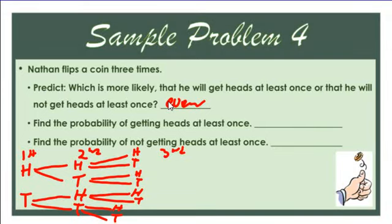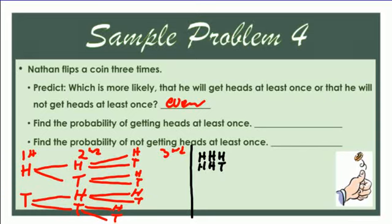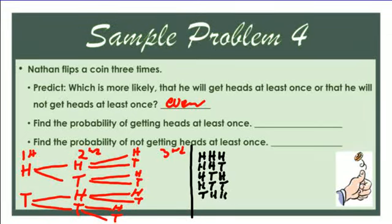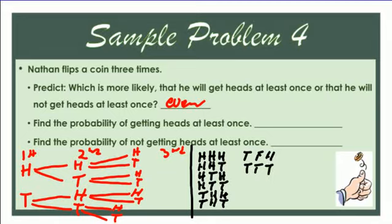Listing all outcomes: HHH, HHT, HTH, HTT, THH, THT, TTH, TTT. Those are all our choices from the tree diagram.